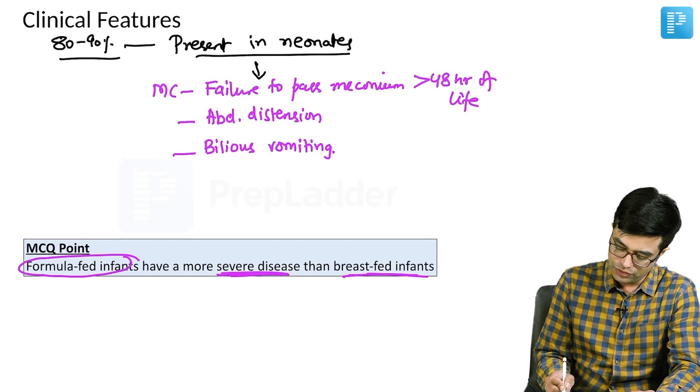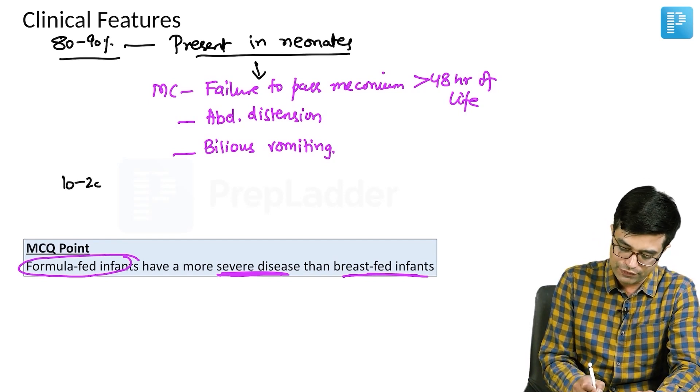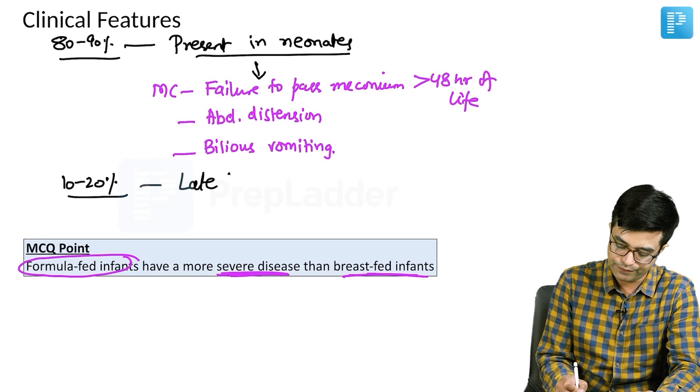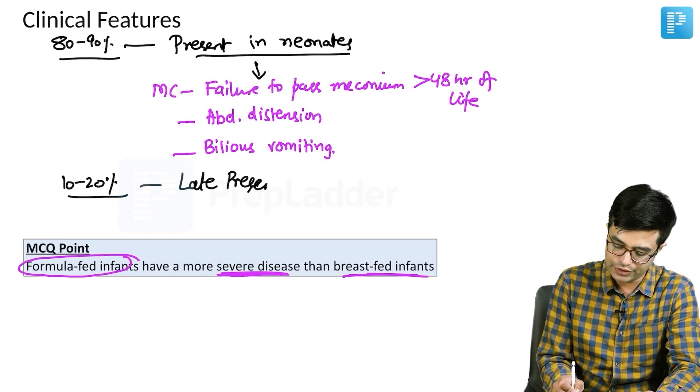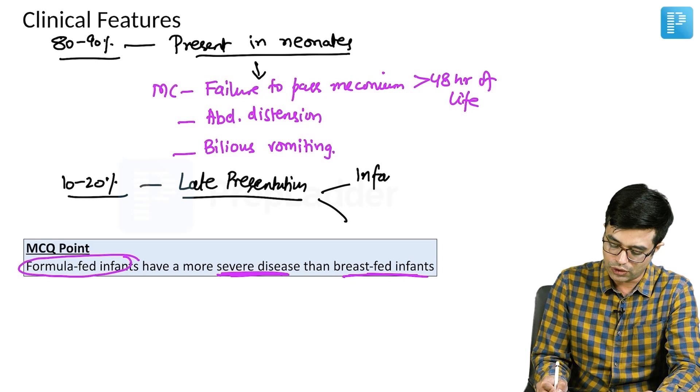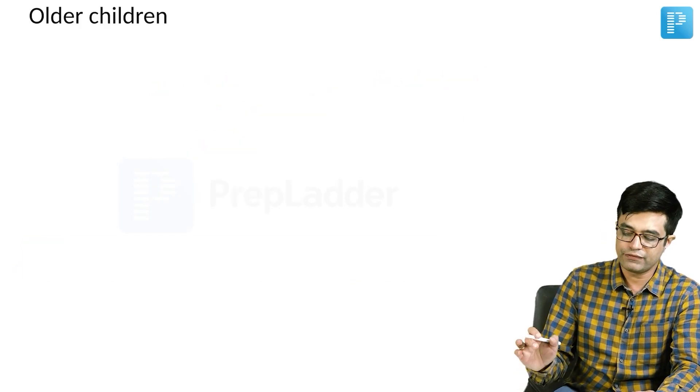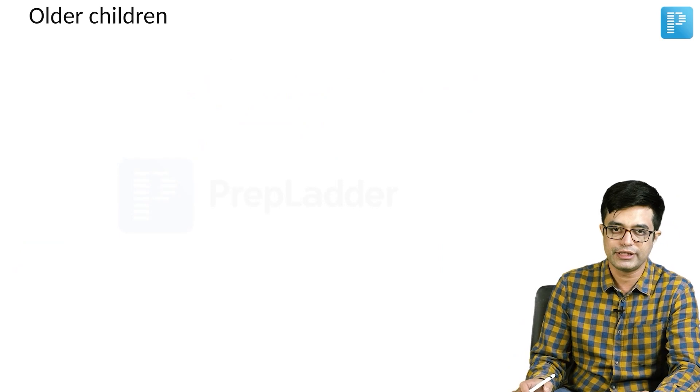Around 10 to 20 percent cases, you will find that there is a late presentation. Late presentation occurs either in infancy or in childhood. So, what is the late presentation features? What are the features seen in older children?